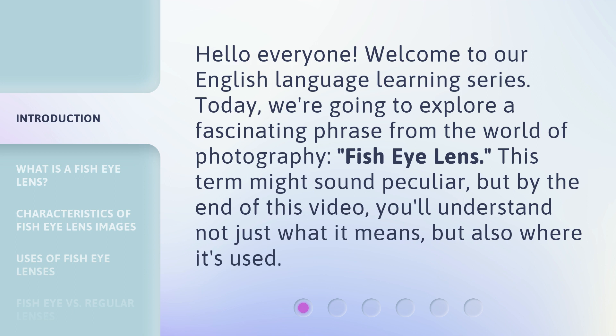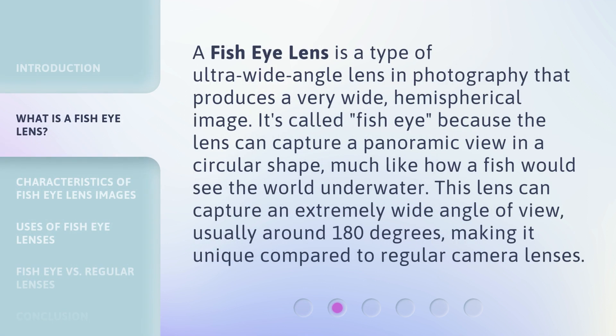This term might sound peculiar, but by the end of this video, you'll understand not just what it means, but also where it's used. A fish eye lens is a type of ultra-wide-angle lens in photography that produces a very wide, hemispherical image. It's called fish eye because the lens can capture a panoramic view in a circular shape, much like how a fish would see the world underwater. This lens can capture an extremely wide angle of view, usually around 180 degrees, making it unique compared to regular camera lenses.